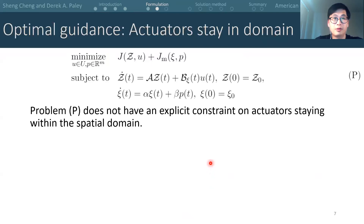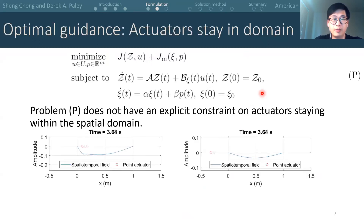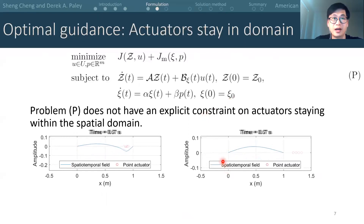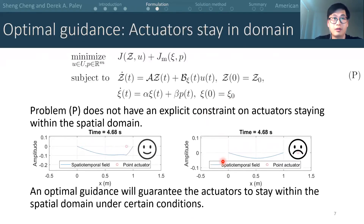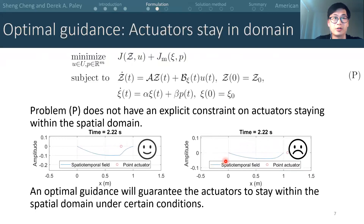Now in this problem setting, we didn't restrict the actuators to stay within the spatial domain. But it could be a problem if the mobile actuators travel outside the spatial domain, because any actuation dispensed outside the domain cannot influence the PDE and hence is wasted. We don't want this to happen. So the theorem we show next is a special case that guarantees the optimal guidance can restrict the actuators within the spatial domain.